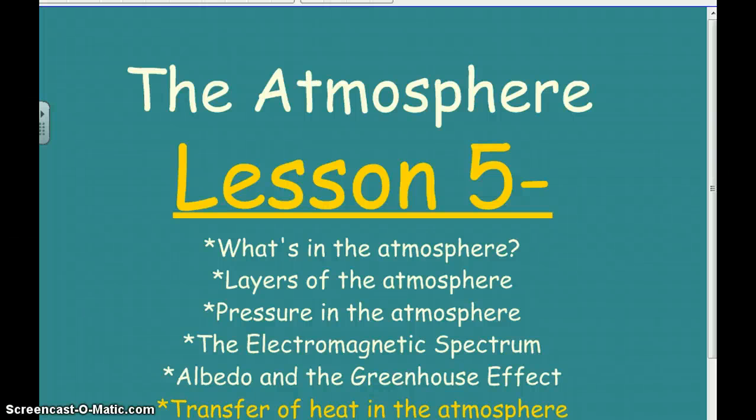The lesson on transferring of heat in the atmosphere comes after we've talked about the albedo and greenhouse effects. Albedo being the ability to reflect light. High albedos reflect more light, low albedos absorb or reflect less light energy. So something with a high albedo will stay cool, or something with a low albedo will absorb the energy from the sun and become warmer.